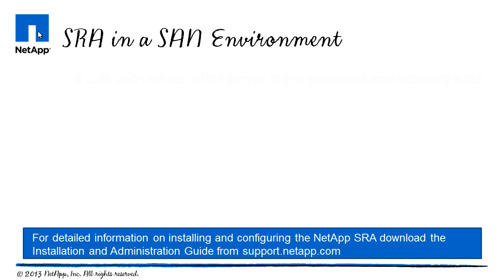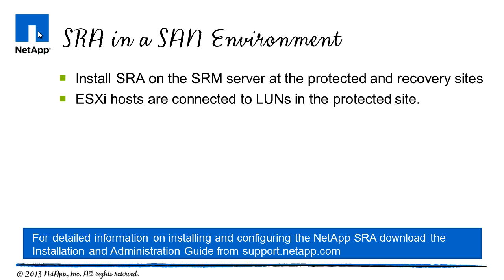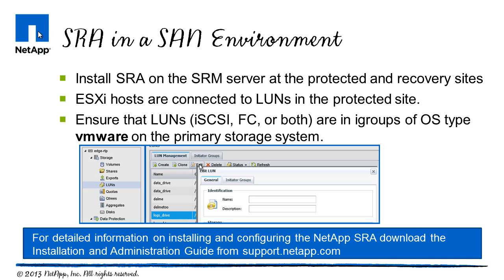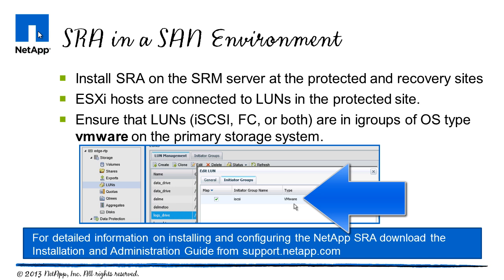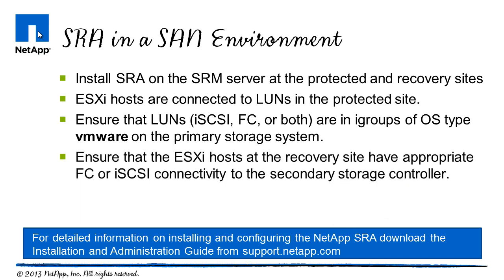In a SAN environment, install the SRA at both the protected and recovery sites. Verify that the ESXi hosts are connected to LUNs in the protected site. Also verify the LUNs — iSCSI, fiber channel, or both — are in iGroups of OS-type VMware on the primary storage system. Lastly, ensure that the ESXi hosts at the recovery site have appropriate fiber channel or iSCSI connectivity to the secondary storage controller.